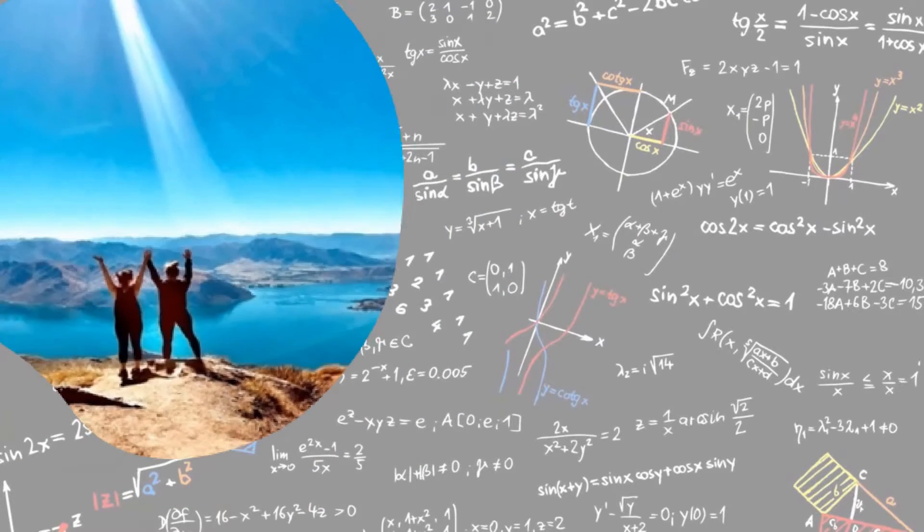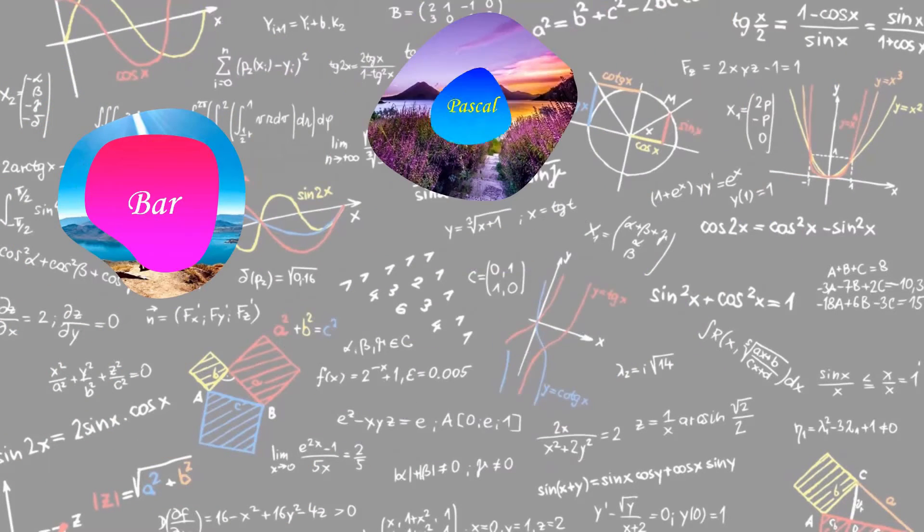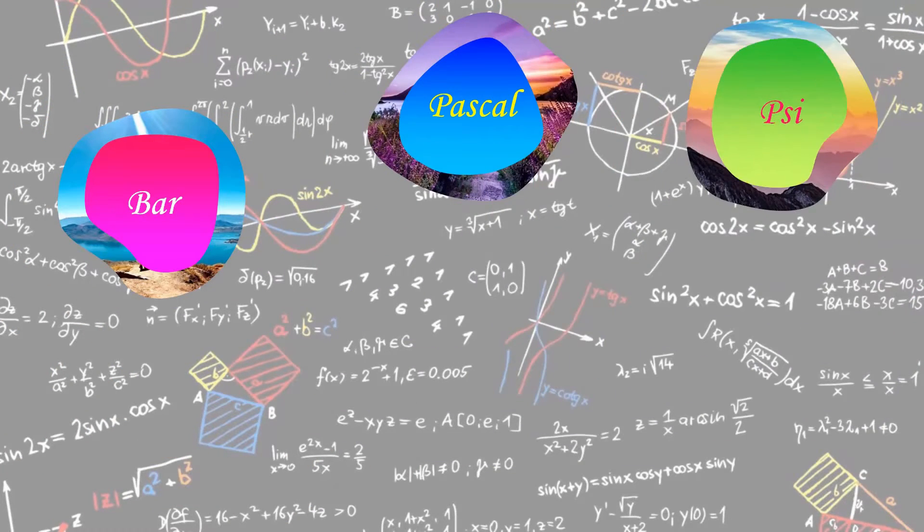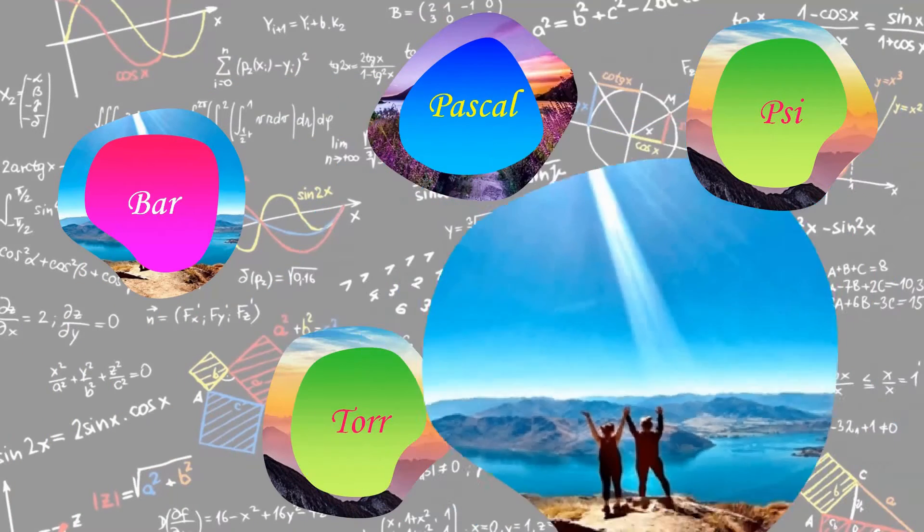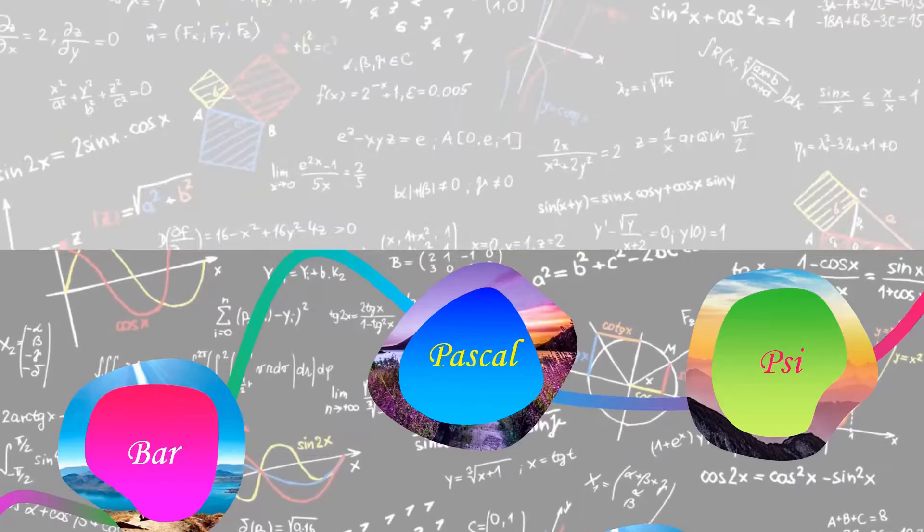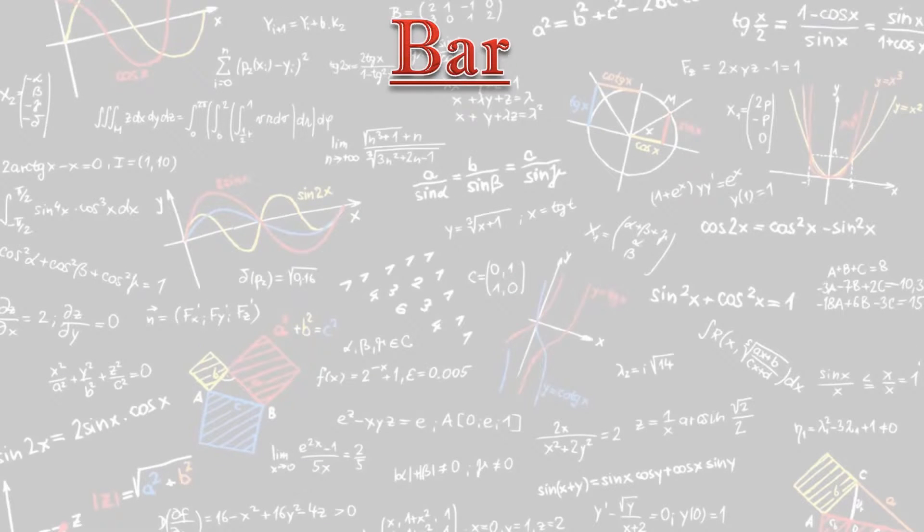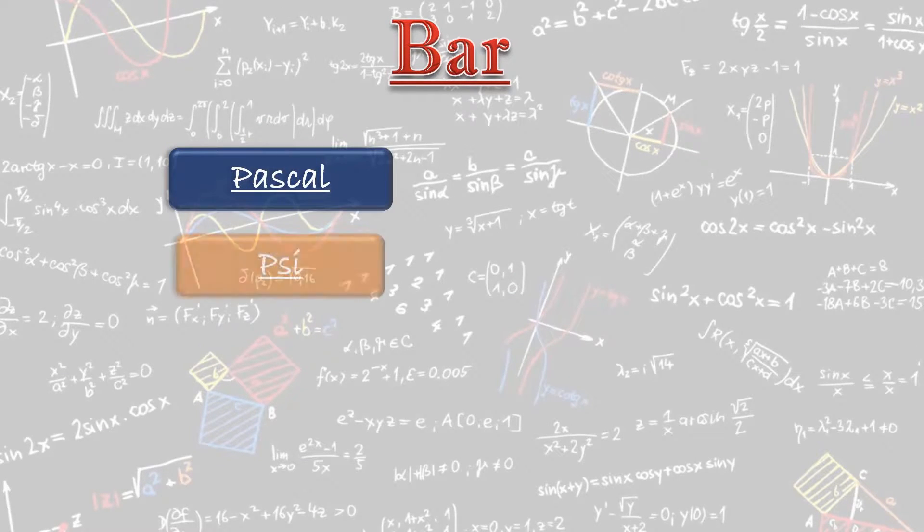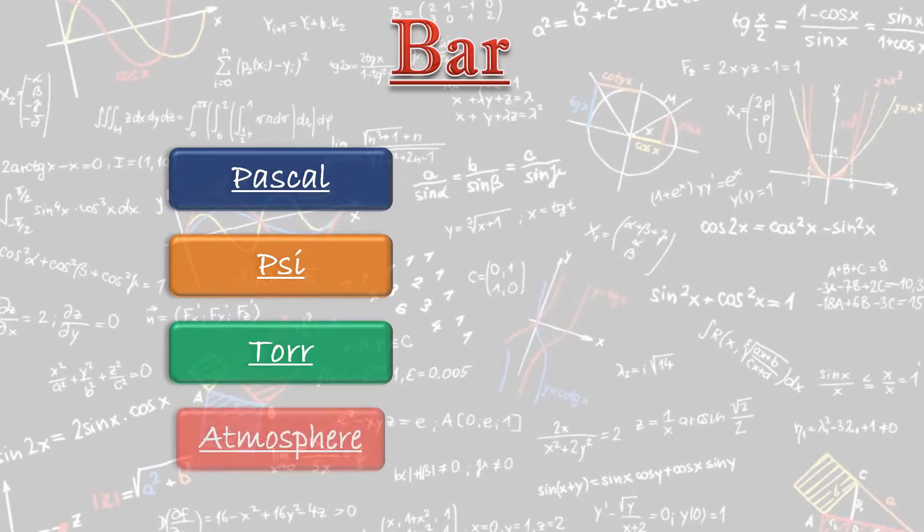So let's see various units used. It is bar, Pascal, PSI, Torr and atmosphere. Now let's see what are correlations of unit bar with Pascal, PSI, Torr and atmosphere.